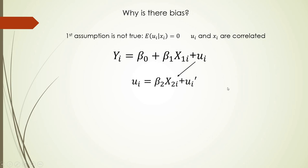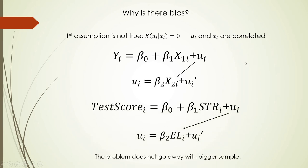This is the problem we need to solve. Also, x2 is correlated with yi. In our example, the percentage of English learners — EL — is included in the error residual. This problem won't go away if you increase the sample size; you need to do something else.